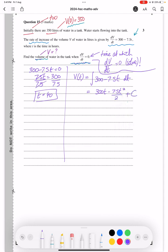We have to add the C since this is an indefinite integral. Now we need to find what this C is. We can use this piece of information to find that. So substitute V(0) equals 350 into this equation.